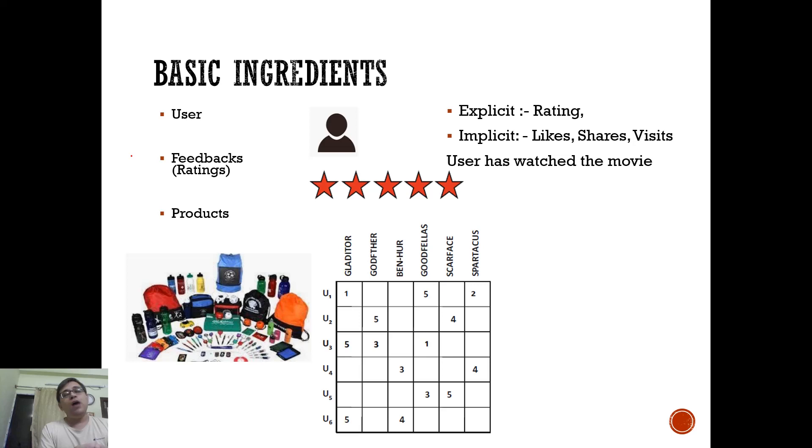And typically, a recommendation system will be represented in terms of a matrix. So you will have different rows. These rows will correspond to different users. And then you will have columns which actually corresponds to products. So in this case, these are movies. Generically, you can say these are for products. And this matrix has a particular name. The name is called as utility matrix or preference matrix.